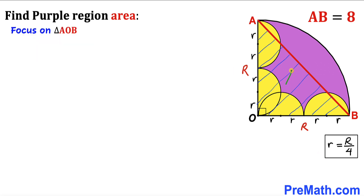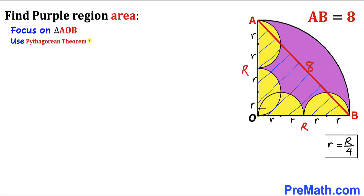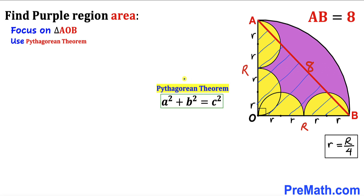Now let's focus on right triangle AOB, whose side lengths are uppercase R, uppercase R, and 8. We are going to apply the Pythagorean theorem: A² + B² = C². The longest leg is 8, so let's fill in the blanks in this Pythagorean formula.